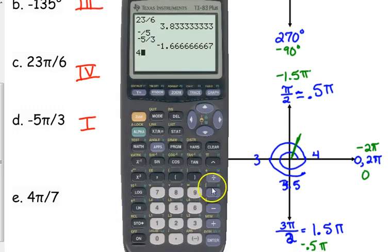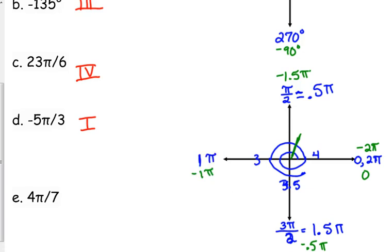4 pi over 7. 4 over 7 is 0.57. So, a little bit more than 0.5, but less than 1. So, that means that is the second quadrant.